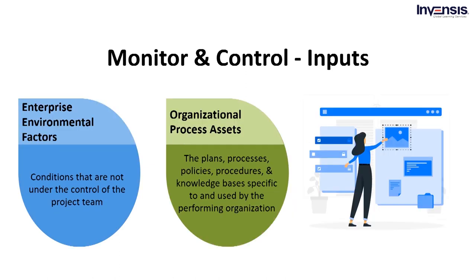Moving on to the next input, we have enterprise environmental factors. These are conditions that are not under the project team's control and vary greatly depending on the type of environment. Firstly, we have government or industry standards, which includes aspects such as regulatory agencies, codes of conduct, product standards, quality standards, and processing standards that affect the process of monitoring and controlling project work. There are also existing human resources — the level of organizational skills, disciplines, and knowledge of design, development, legal, contract, and purchasing skills that influence the oversight and management process.